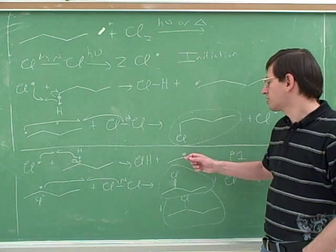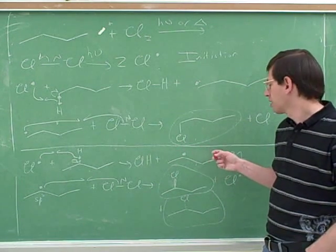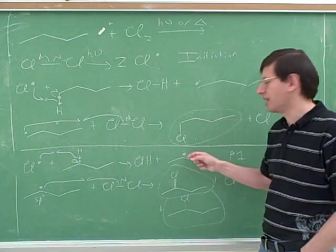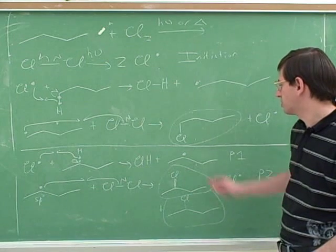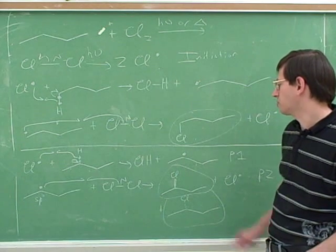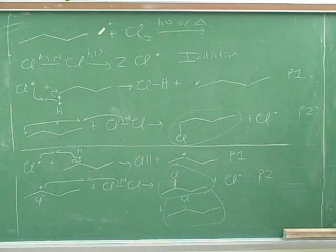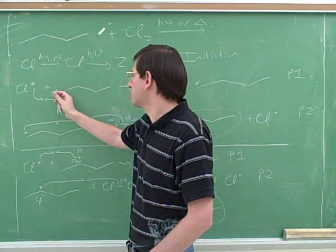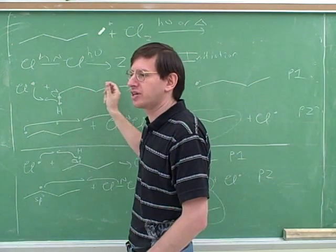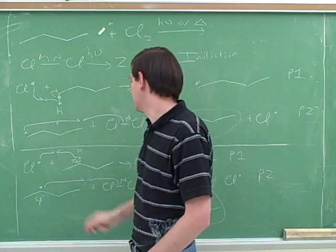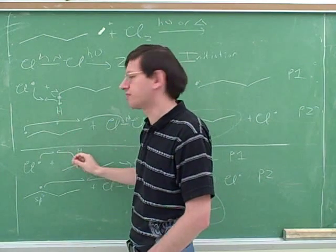That's why the more substituted carbocation is more stable — stabilized by carbon chains. Similarly, the more substituted radical is more stable for the same reason. Substitution with carbon chains stabilizes both radicals and carbocations. Now, considering which hydrogen halogens prefer to take, there are more terminal hydrogens than internal ones: six terminal hydrogens versus only four internal hydrogens in this molecule. Does that make sense?